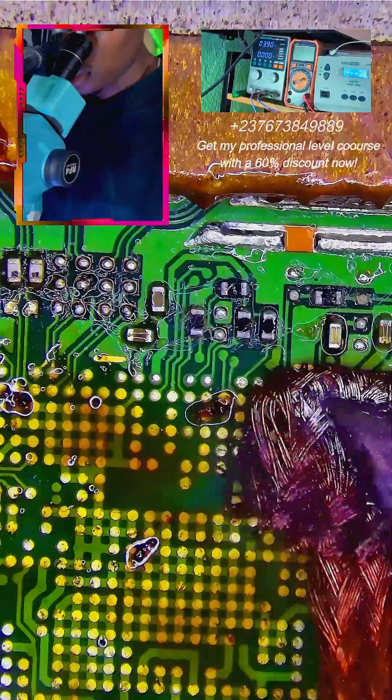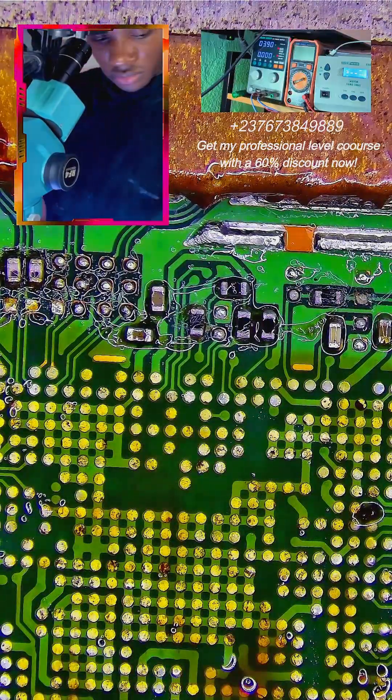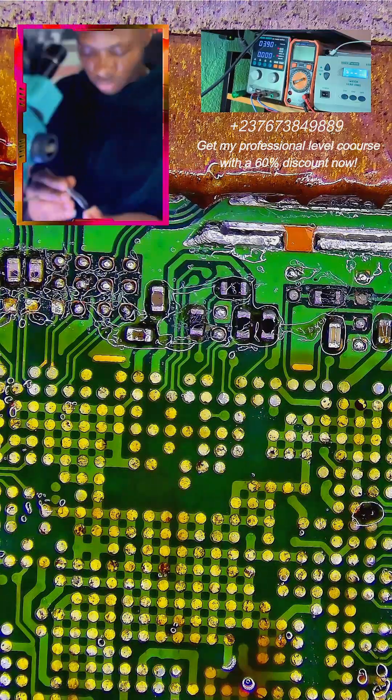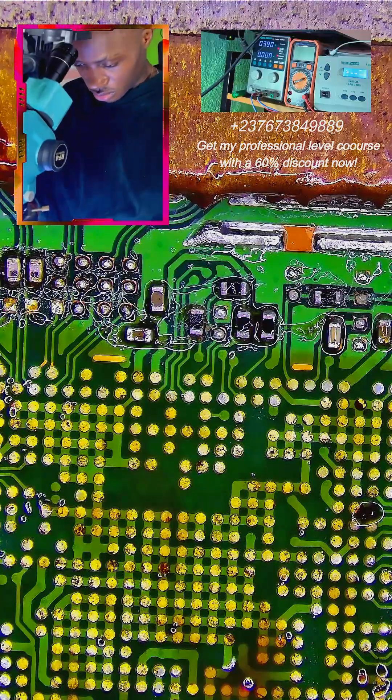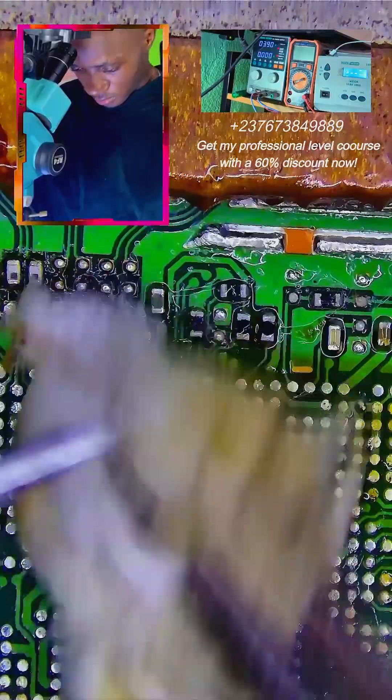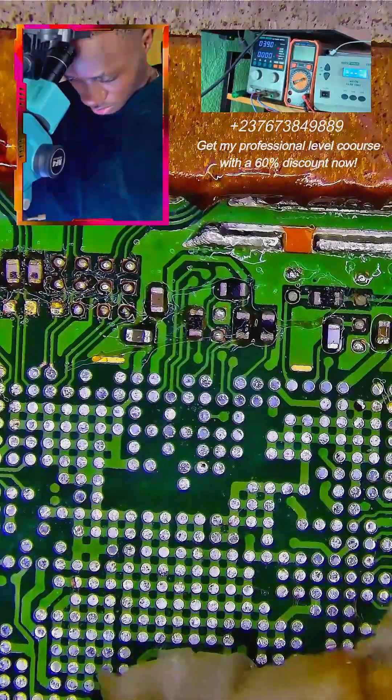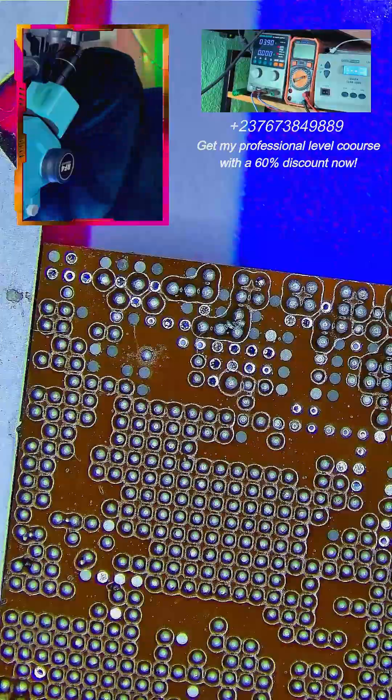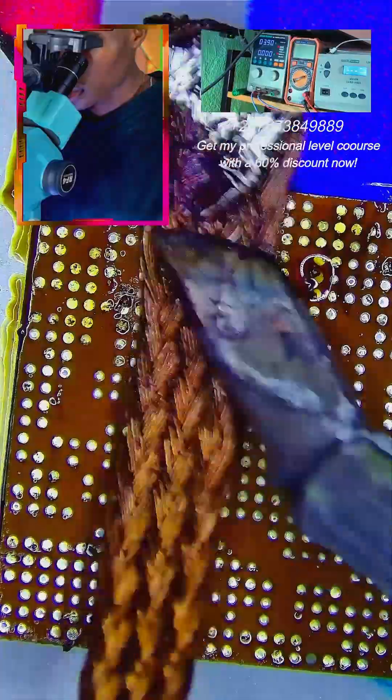As you can see, I'm cleaning the solder parts of the PCB, making sure that every part there is leveled, has the same level with the other. Making sure that everything is clean. Well, if you are not good at reballing, I have dedicated videos on how you can reball with universal stencils.